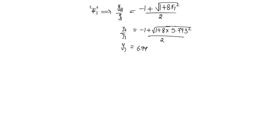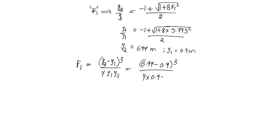Since y1 we know as 0.9 meters, y2 will be 6.94. So the energy loss will be y2 minus y1 whole cube by 4 into y1 into y2, which is 6.94 minus 0.9 whole cube by 4 into 0.9 into 6.94, which will be equal to 8.82 meters.